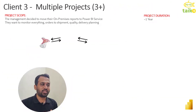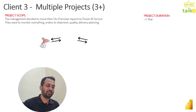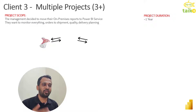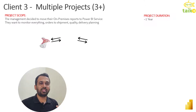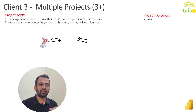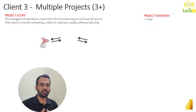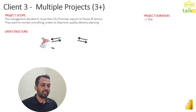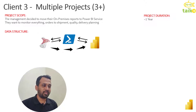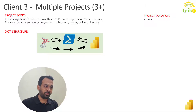So what is the project scope? Management decided to move their organization's on-premises reports to Power BI service. They want to monitor everything — orders, shipment, quality, delivery, and planning. They are already using SQL Server on-prem and don't want to give everything to Power BI cloud, so they want to monitor everything on the SQL Server on-prem. They also have multiple ERPs running custom-based solutions. The data structure is: they have on-prem SQL Server and want reporting into Power BI.